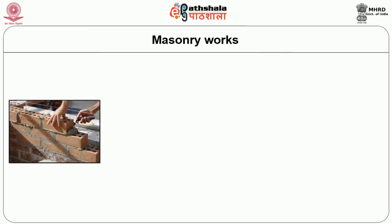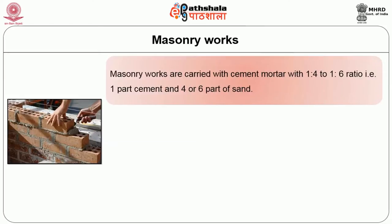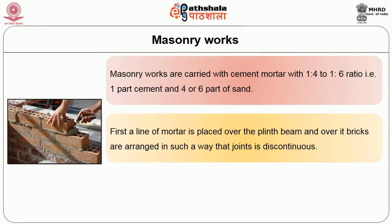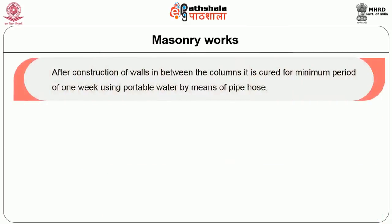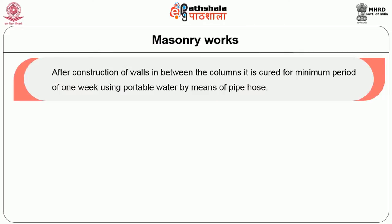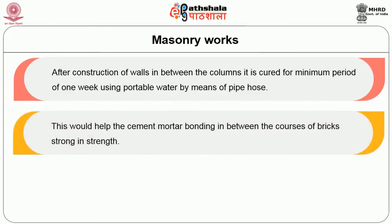Level 4 is masonry work. Once the framed structure is completed, construction of brick walls in between the columns is done. Masonry works are carried out with cement mortar of ratio 1:4 to 1:6 — that is one part cement and four or six parts of sand. First a line of mortar is placed over the plinth beam and over it bricks are arranged such that the joints are discontinuous. Bricks should be kept wet by soaking in water for one hour before usage. Verticality of the wall is checked using a plumb bob. After construction of the walls, they are cured for a minimum period of one week using potable water by means of pipe hose, which helps the cement mortar bonding between the courses of bricks gain strength. Openings for doors and windows as per plan are left open while constructing the walls.